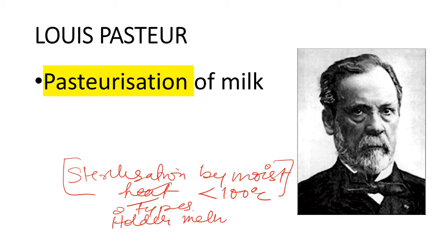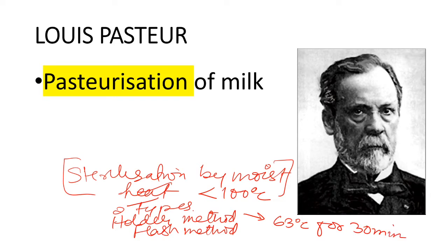The first type is the Holder method and the other is the Flash method. In the Holder method, we heat at 63 degrees Celsius for 30 minutes. In the Flash method, we heat at 72 degrees Celsius for 20 seconds, and then cool it to 13 degrees Celsius.